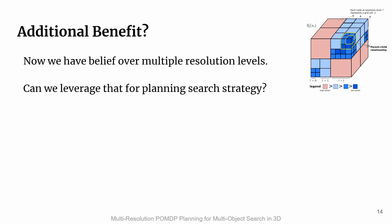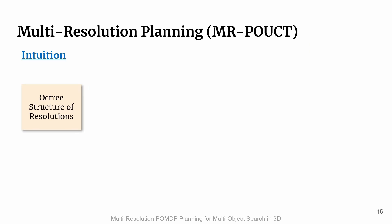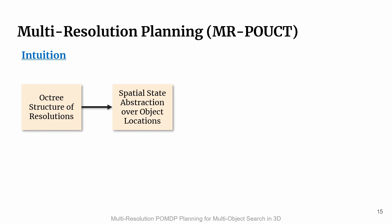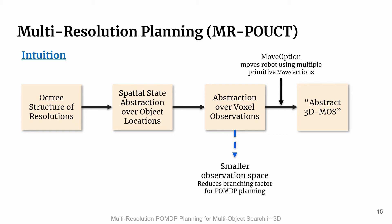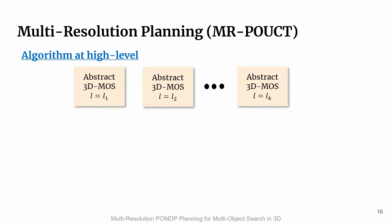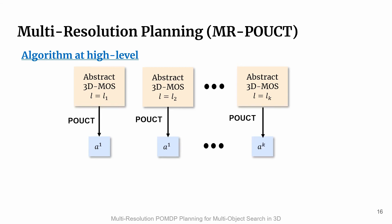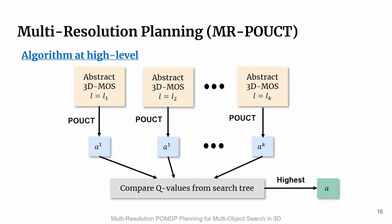Now that we have belief over multiple resolution levels, can we leverage that for planning? To this end, we propose a multi-resolution planning algorithm, MRPO-UCT. The intuition is that the AugTree structure of the resolutions can be regarded as spatial state abstractions over object locations, which is then used to derive abstraction over voxel observations. This leads to a smaller observation space and reduces the branching factor for POMDP planning. Combining with move options — which move the robot using multiple primitive move actions — we formulate an abstract 3DMOS model with the same reward function as the ground-level 3DMOS. For planning, we select a number of resolution levels and instantiate abstract 3DMOS instances, which are planned in parallel using POMDP. The Q values of these actions are compared, and the action with the highest Q value is selected for execution.